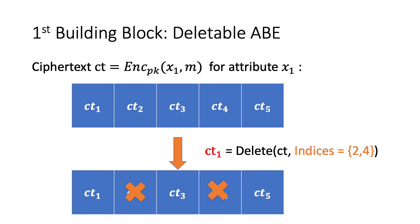Now let's go to our first building block: deletable ABE. We demonstrate the deletable property as follows. Given a ciphertext — an encryption of a message M to attribute X1 — we can view the ciphertext as a composition of a few blocks. We can then perform an algorithm called Delete on the ciphertext. This Delete algorithm takes in the ciphertext and a set of indices, and deletes the blocks in the ciphertext indexed by those indices — for example, indices 2 and 4 — and we just take away blocks 2 and 4.